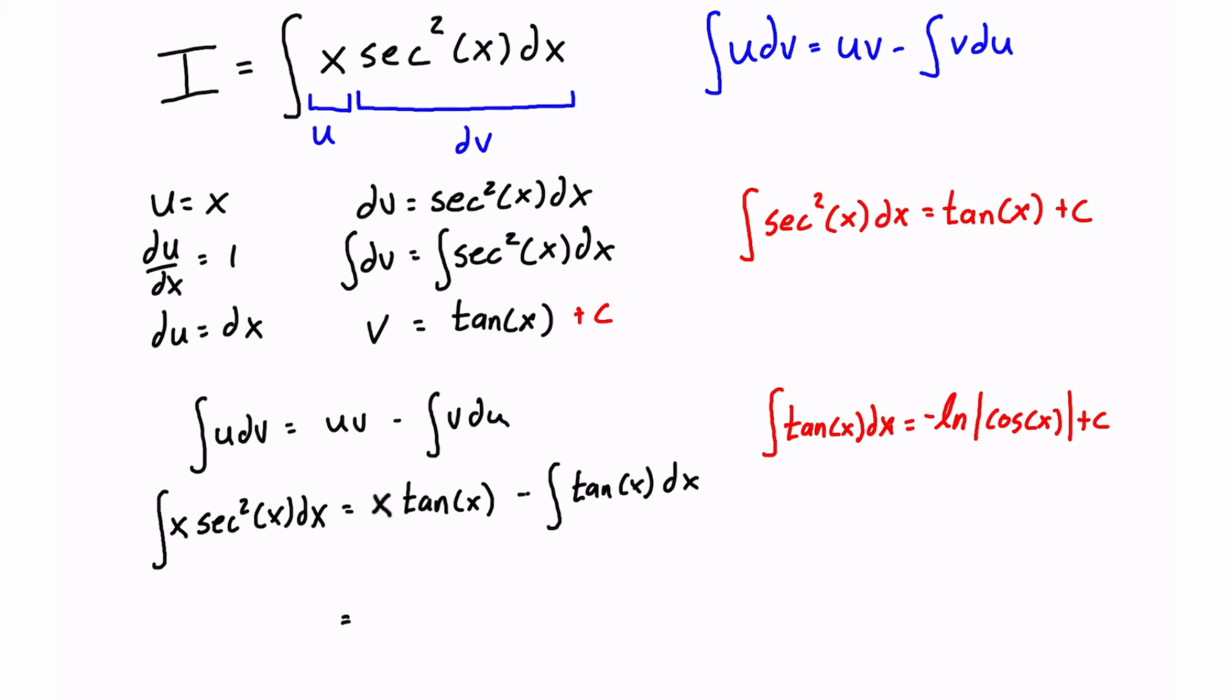So let's just simplify this a little bit. So we have u tan of x minus negative ln, so that's actually going to become plus ln of the absolute value of cos x plus c. Now at this point we're just going to add in plus c because we can't simplify this any further.